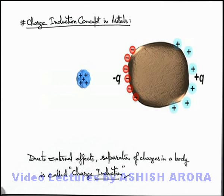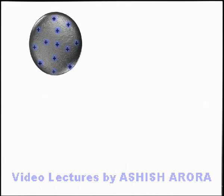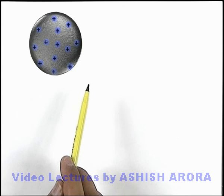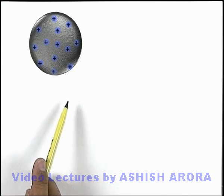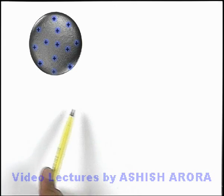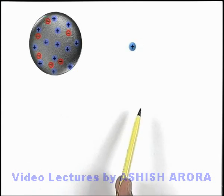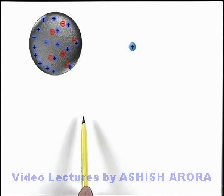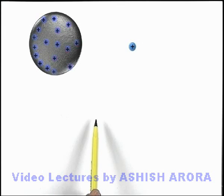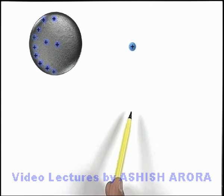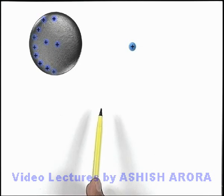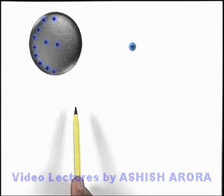Let's continue with the effect of charge induction on distribution of charges on a metal body. Here you can see if we have a metal sphere which is positively charged, and initially all the positive charges are distributed uniformly on this metal sphere, and say if another positive charge is brought closer — this positive charge will shift some free electrons within this metal sphere from the left side to the right side, due to which the charge distribution will be affected. As this charge comes closer, electrons will shift, and on the right side of this body positive charge density is decreased, on the left side positive charge density is increased.